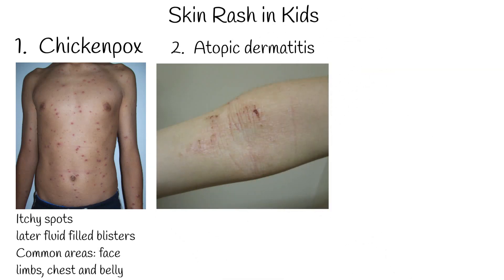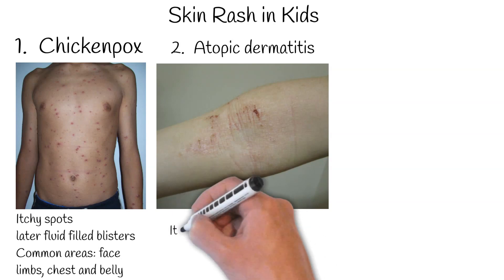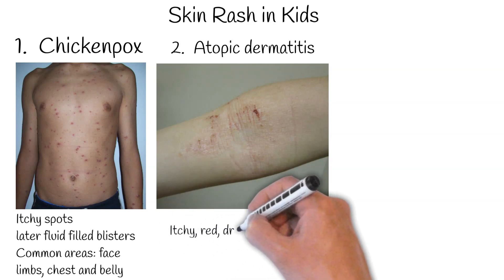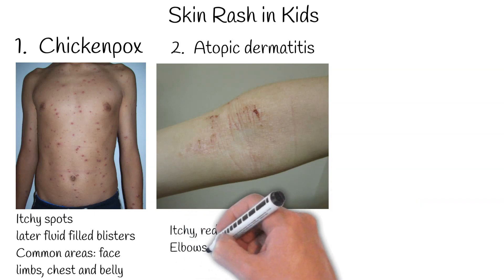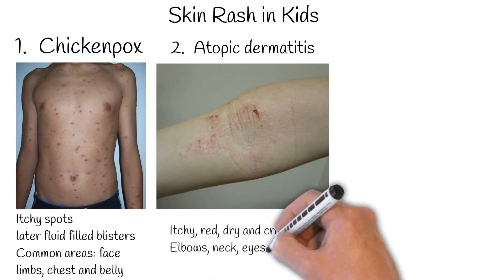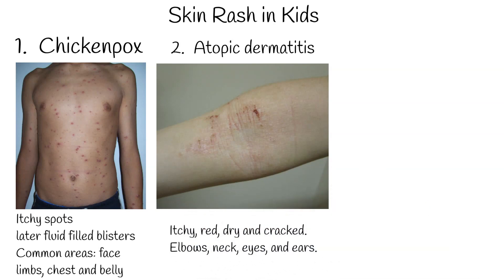Atopic dermatitis, also known as eczema, is a long-term allergic disease. The skin becomes itchy, red, dry, and cracked. Common locations of atopic eczema are behind the knees or on the elbows, neck, eyes, and ears.